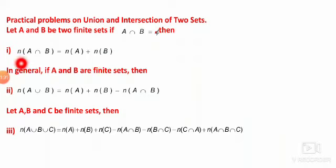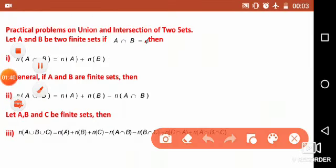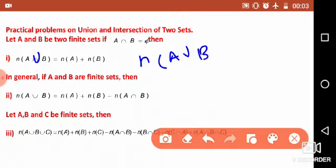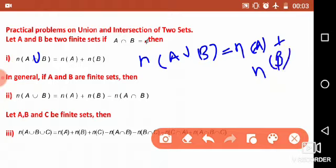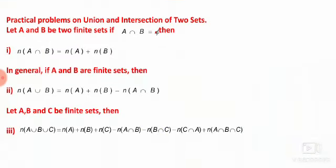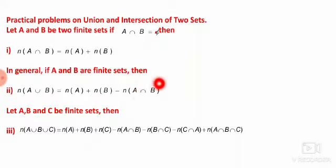Note: in the first formula we should write N of A union B is always equal to N of A plus N of B. In the general case where the intersection between the two sets is not empty, N of A union B is always equal to N of A plus N of B minus N of A intersection B.